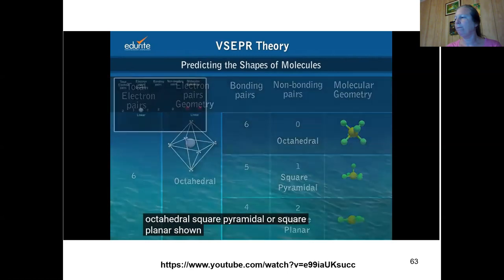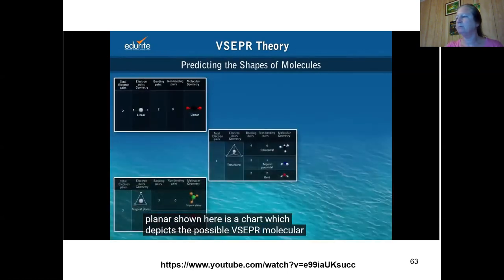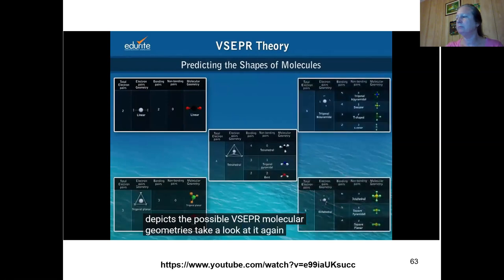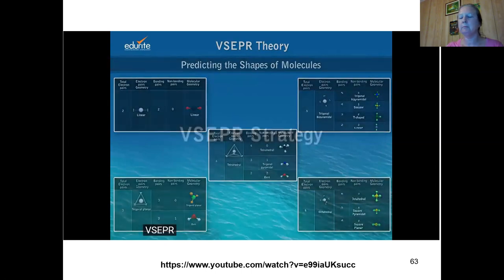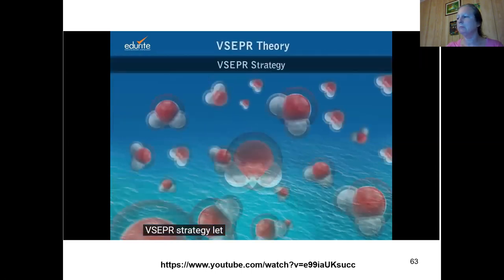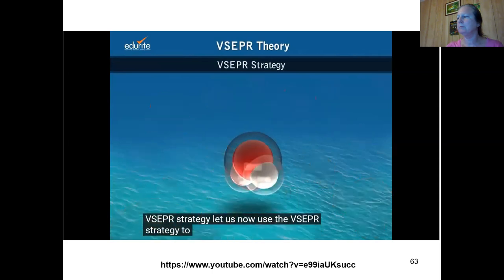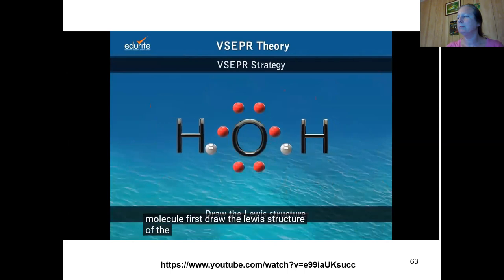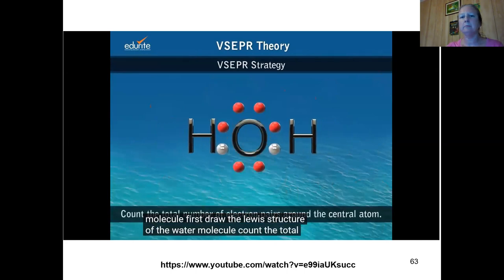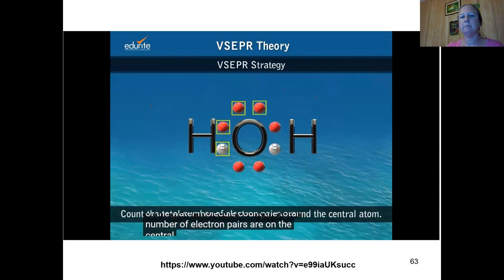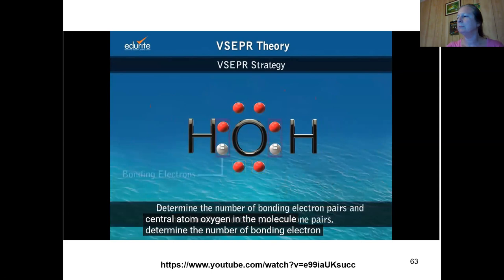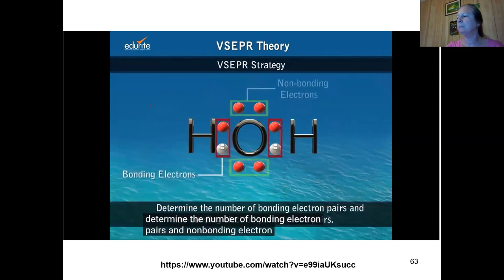There is a chart which depicts the possible VSEPR molecular geometries. Using the VSEPR strategy, let's predict the shape of a water molecule. First, draw the Lewis structure of water. Count the total number of electron pairs around the central atom, oxygen. Then determine the number of bonding and non-bonding electron pairs.